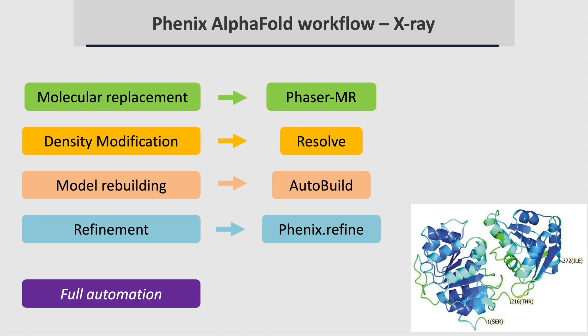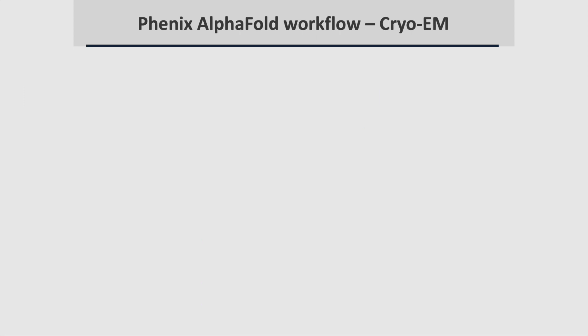Finally, you can run a fully automated procedure, Predict and Build, which will combine all of these steps with the Phoenix AlphaFold server and Process Predicted Model to predict the chains in your structure, trim them and find domains, run molecular replacement, optimize your map, rebuild and refine your model, and iterate to improve your model and map.